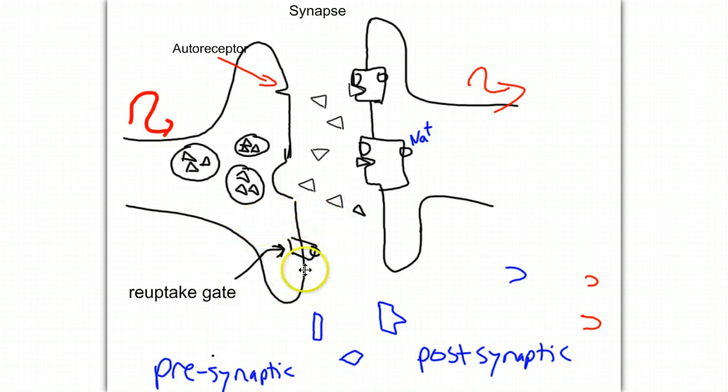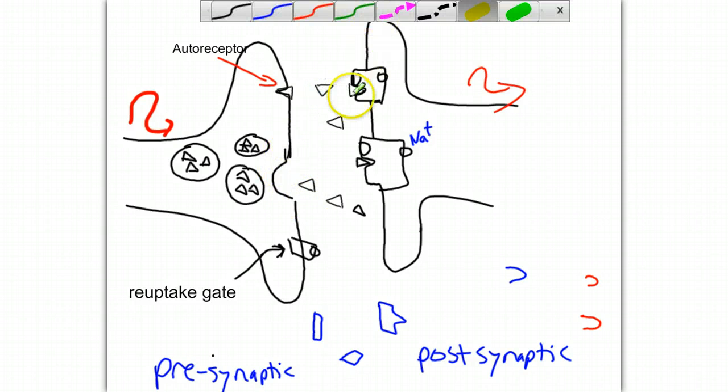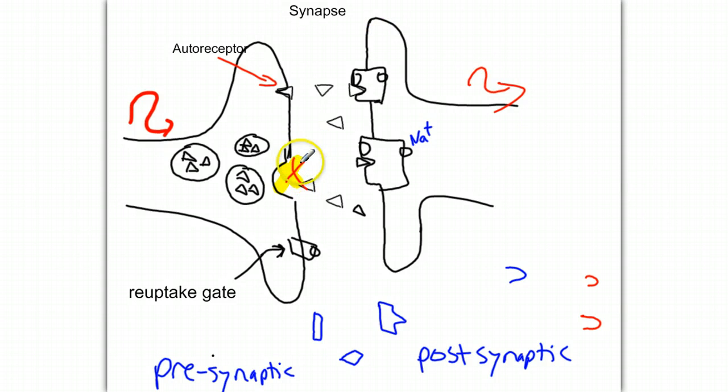The reuptake gate is something I want to look at. We also have autoreceptors. An autoreceptor is a receptor on the presynaptic side such that if one of these neurotransmitters binds to the autoreceptor, that's basically like an off switch telling this releasing neuron that there's enough neurotransmitters in the synapse and we don't need to release any more. We're kind of shutting this system down, stopping, turning off releasing neurotransmitters. It acts as an off switch, that autoreceptor.